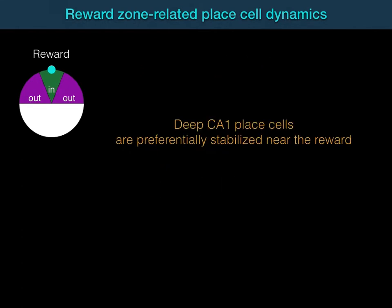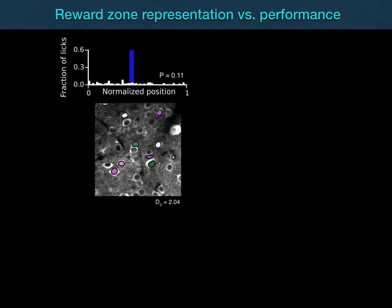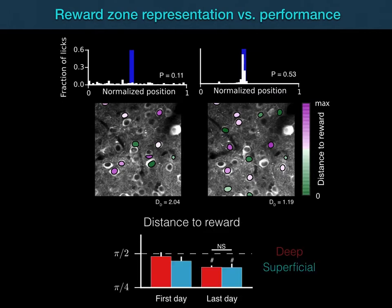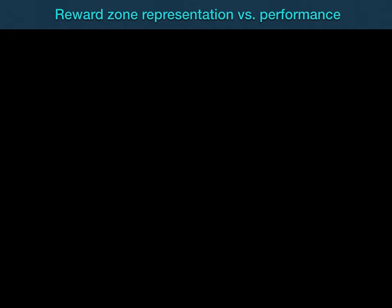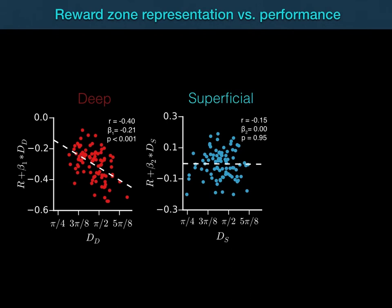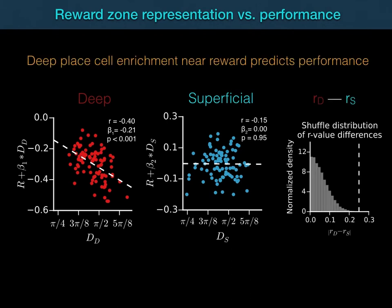Together, these results suggest that neuromodulatory systems involving attention or reward might differentially modulate the sublayers. Representation of reward has been linked to task performance on the freely moving cheeseboard task, so we asked whether the same dynamics were present in our task and whether the relationship between remapping and performance was similar between the sublayers. We quantified task performance p as the fraction of licks occurring in the reward zone, and d was taken as the mean distance from each place field to the reward. By the end of learning, we found an increased representation of the reward zone by cells in both sublayers. However, deep reward representation was significantly more predictive of performance than superficial reward representation, and a shuffle analysis confirmed that remapping in the deep sublayer was more tightly linked to performance than superficial.